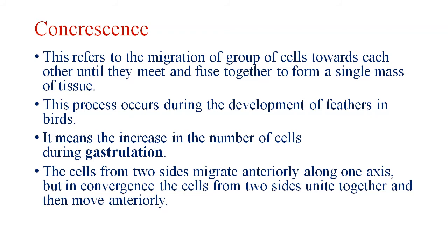Concrescence refers to the migration of a group of cells towards each other until they meet and fuse together to form a single mass of tissue. This process occurs during the development of feathers in birds. The cells from two sides migrate anteriorly along one axis, but in case of convergence, the cells from two sides unite together and then move anteriorly.